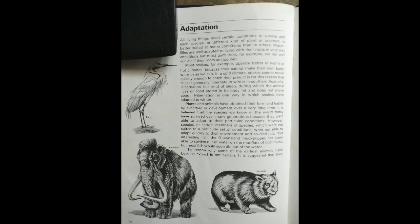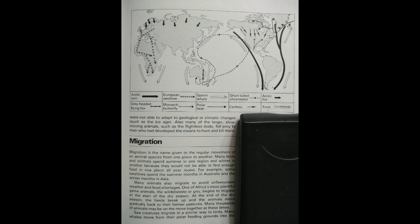The mammoth became extinct because it could not adapt to the ice age conditions. Many birds, animals, and fishes migrate seasonally, moving from breeding to feeding places and returning the following year. Birds like the Arctic Tern sometimes fly thousands of miles to avoid the cold winters of the northern hemisphere. Mammals like the caribou may move between winter and summer quarters in search of food.